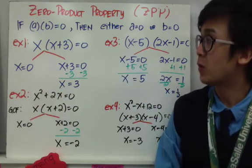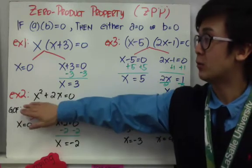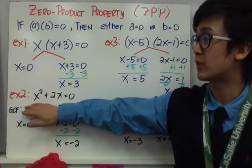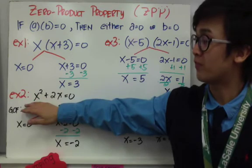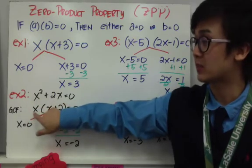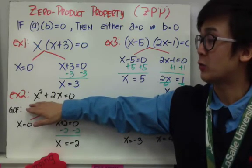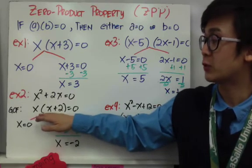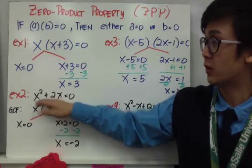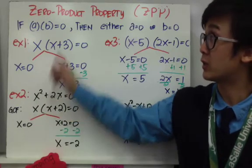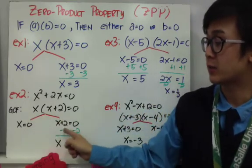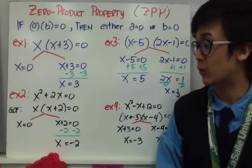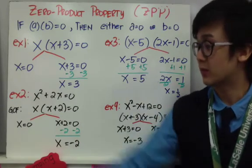Sometimes the zero product property is not used right away. For example, x squared plus 2x equals 0 — a quadratic with a missing constant. We find the GCF, which is x, and factor to get x times x plus 2 equals 0. Then applying the zero product property: x equals 0, and x plus 2 equals 0 gives x equals negative 2. So the two values are 0 and negative 2.